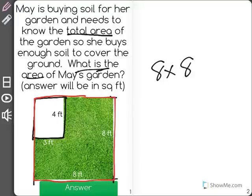So let's start by doing 8 times 8. 8 times 8 is equal to 64. So this entire garden, if she had this blank space over here filled in, would have an area of 64 feet squared.